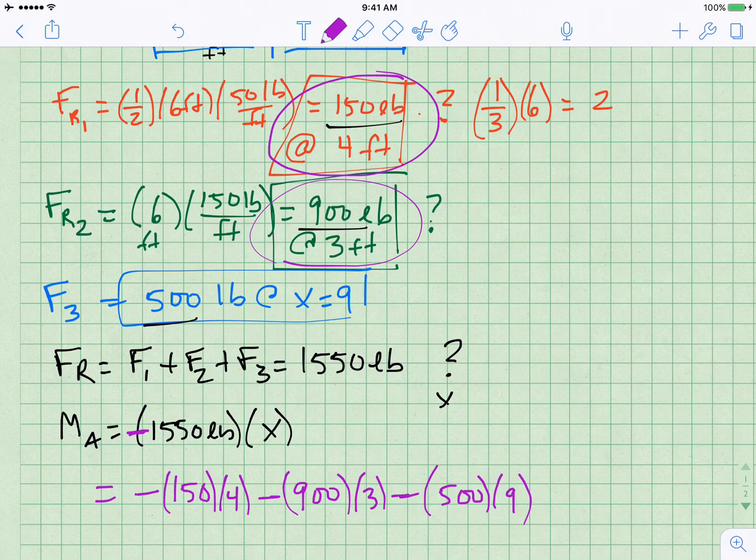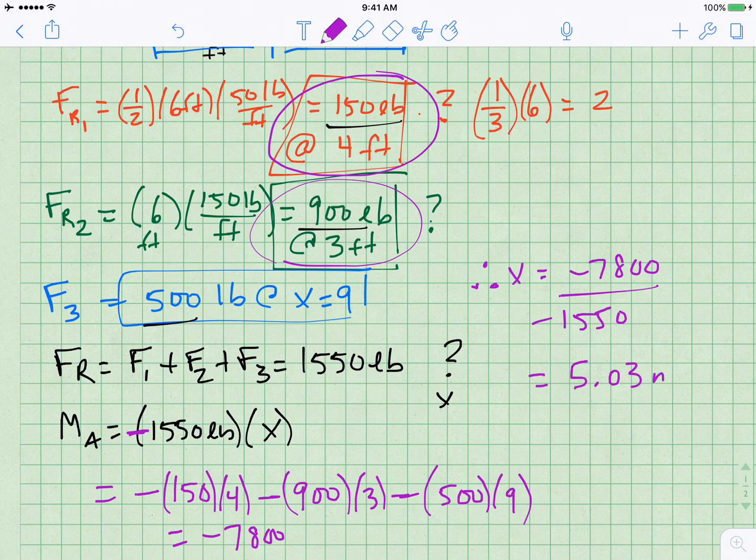So 150 times 4 is negative 600. 3 times 900 is 2,700. So this all adds up to negative 7,800, and therefore x equals negative 7,800 foot-pounds divided by negative 1550 pounds, and therefore x is equal to 5.03 feet.